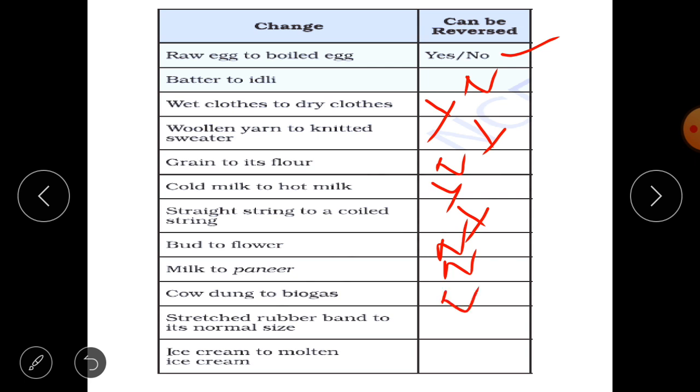Stretched rubber band to its normal size. Yes you must have played with the rubber band. It's a reversible change. Lastly ice cream to molten ice cream. That's again a reversible change. You can reverse it, just because this molten ice cream can be kept in refrigeration and you will get back the frozen ice cream.